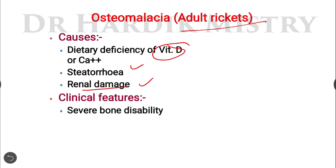Renal damage causes osteomalacia by decreasing calcium ion concentration because the activation of vitamin D occurs through the kidney step by step. When the kidney is damaged, the vitamin D activation process is hampered, leading to a decrease in vitamin D and hence a decrease in calcium ion concentration, resulting in hypocalcemia — the condition known as osteomalacia or adult rickets.